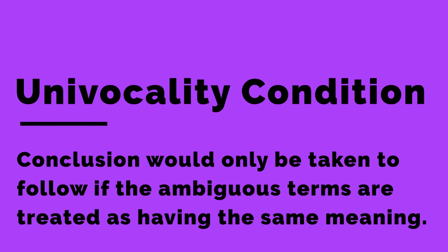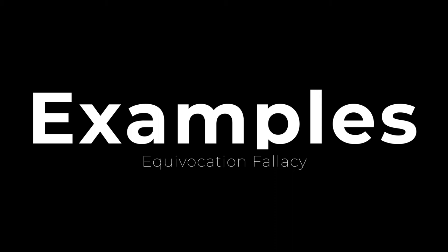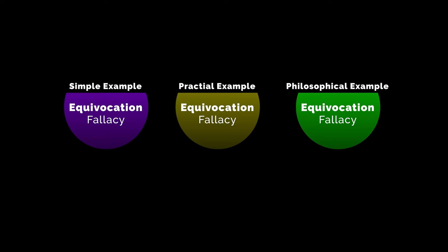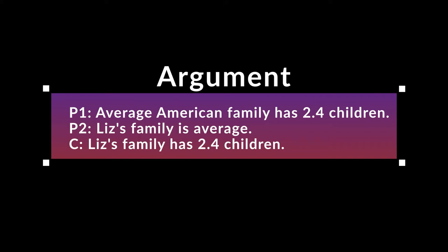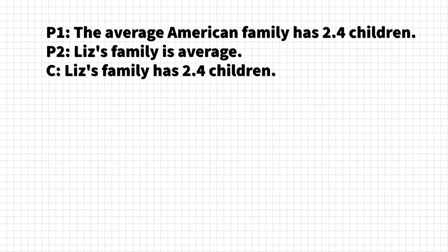Now let's look at some examples — simple examples, some real-life examples, and one example drawn from philosophy or ethics. Here's a classic silly example. The argument is: the average American family has 2.4 children; Liz's family is average; therefore, Liz's family has 2.4 children. This argument is silly, but it definitely commits the equivocation fallacy. To see this clearly, let's look through the three conditions. The first is the ambiguity condition.